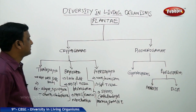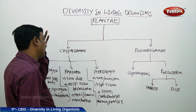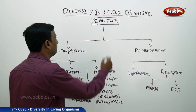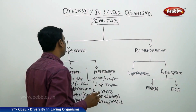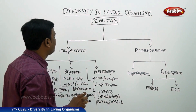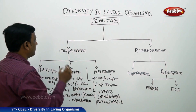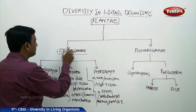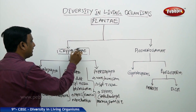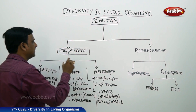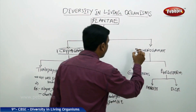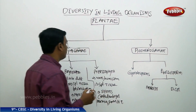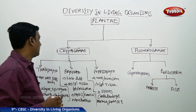Now let us see the classification or the subdivision of the Kingdom Plantae. The Plantae is mainly classified into two main groups: Cryptogamae and Phanerogamae.